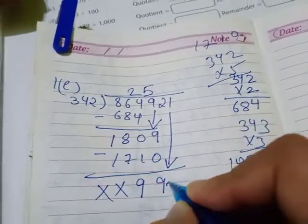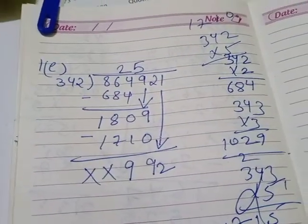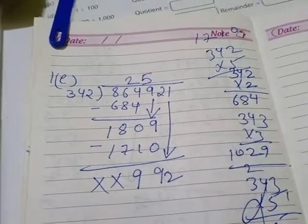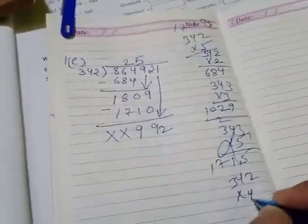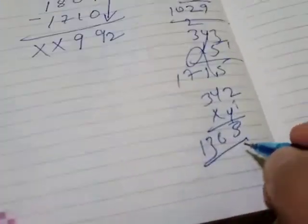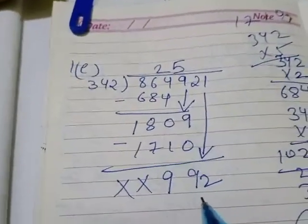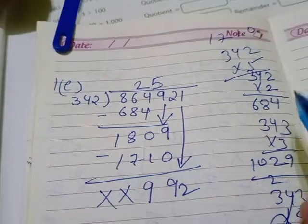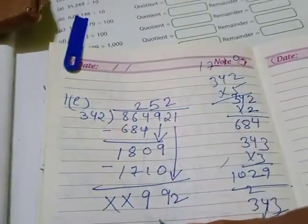In the table of 342 we want 992 again. First we will try with 4. 342 into 4: 2s are 8, 4 4s are 16, 12, 13. We will get here 4 digit number. Do we want 4 digit? No, we want any number which is near to this one and should be 3 digit. So I think we will take 2 times only.